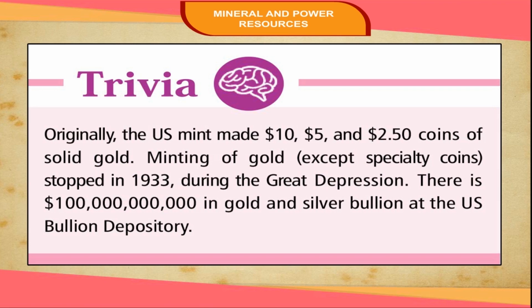Trivia: Originally, the U.S. Mint made $10, $5, and $2.50 coins of solid gold. Minting of gold coins, except specialty gold, stopped in 1933 during the Great Depression. There is $100 billion in gold and silver bullion at the U.S. Bullion Depository.